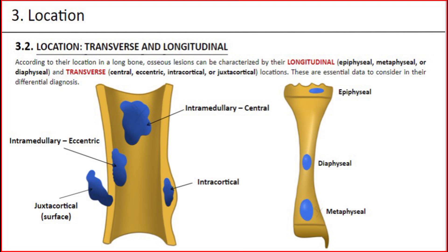Location as regards transverse and longitudinal position. According to their location in a long bone, osseous lesions can be characterized by their longitudinal position — epiphyseal, metaphyseal, or diaphyseal — and transverse position — either central, eccentric, intracortical, or juxtacortical. These are essential data to consider in their differential diagnosis.